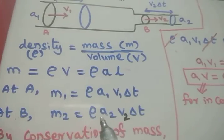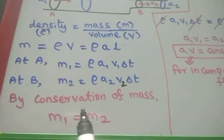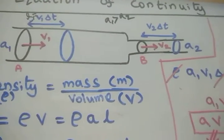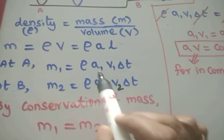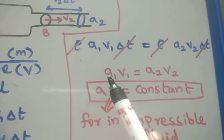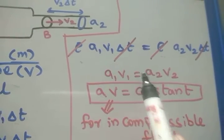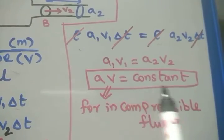The same rho is used because the same incompressible liquid flows throughout. By conservation of mass, the amount of liquid entering at point A must come out at point B — no liquid is lost or gained. So M1 must equal M2. Equating the two expressions, rho and delta T cancel, giving us A1 V1 equals A2 V2. The product of area of cross section and velocity is constant.